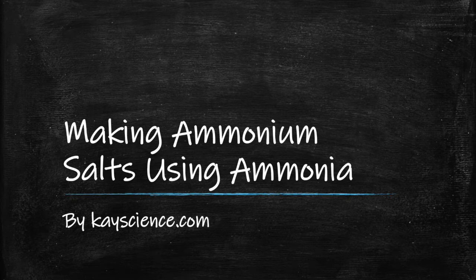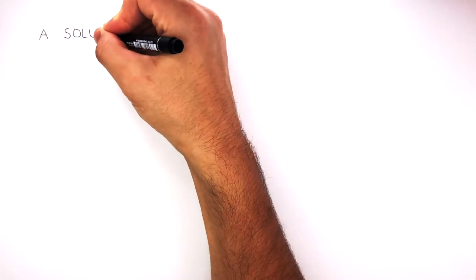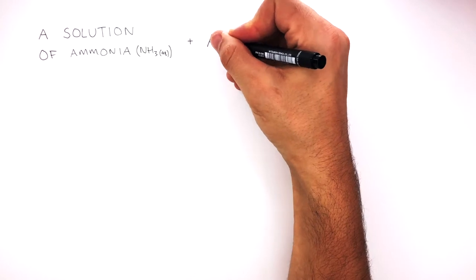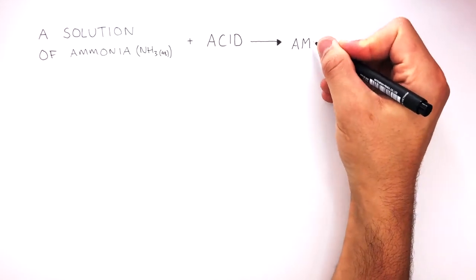Making Ammonium Salts Using Ammonia by kscience.com. A solution of ammonia, NH3, AQ for aqueous, can react with different acids to form different ammonium salts.